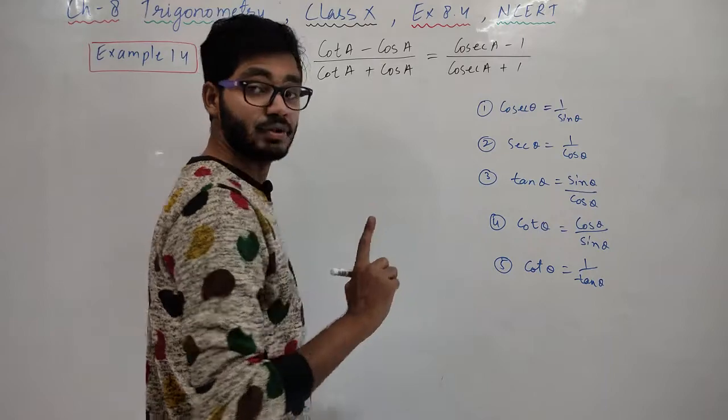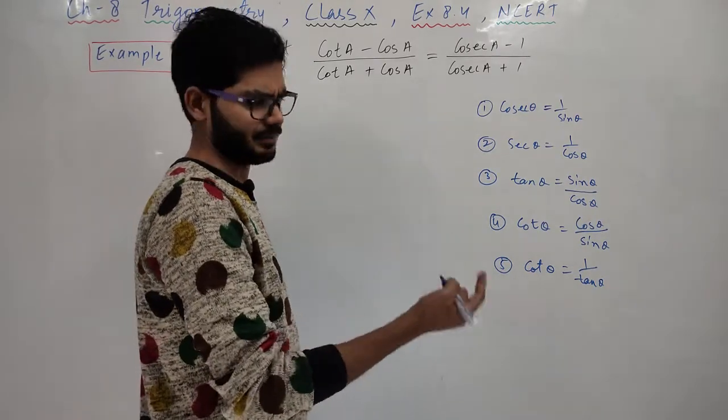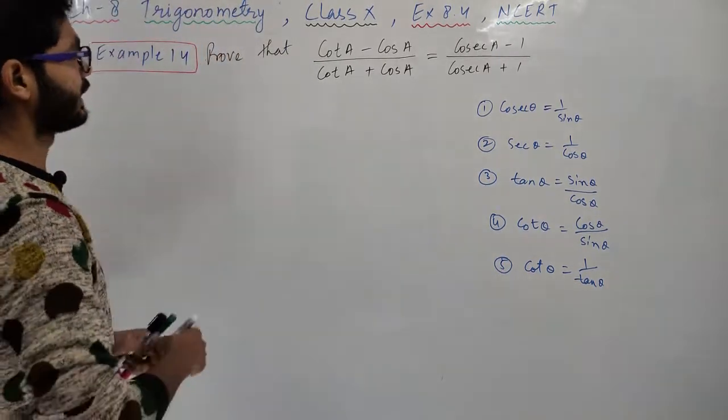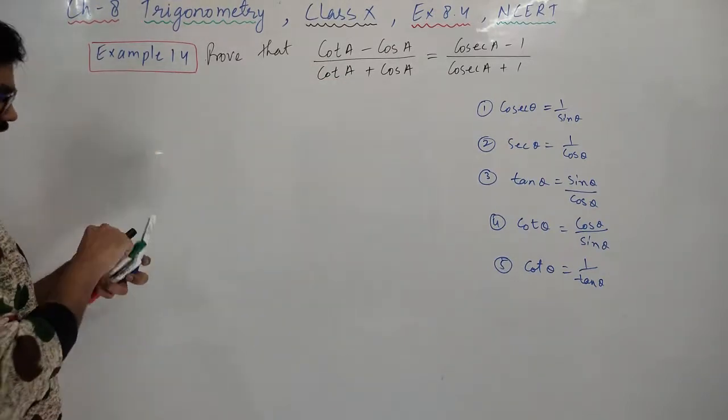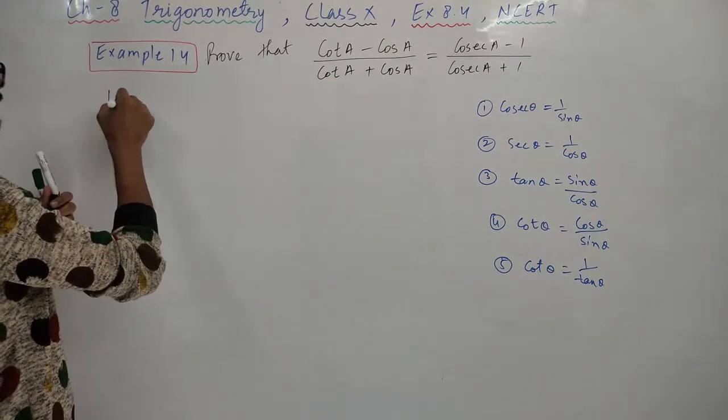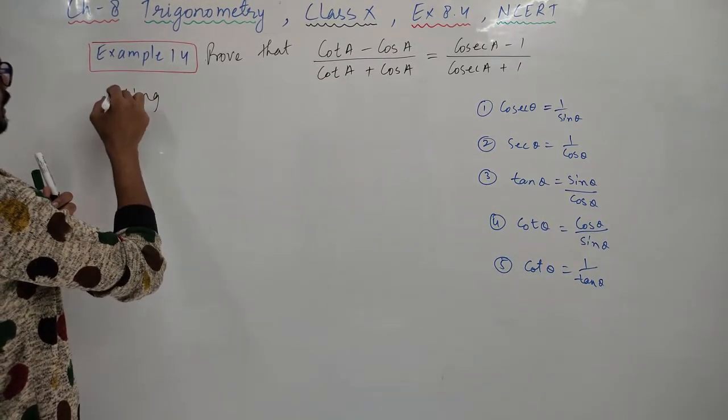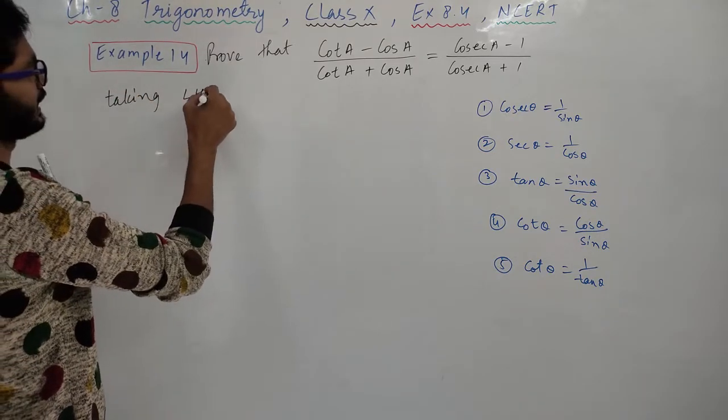You don't need this. But the three identities from the exercise, you should know those. Okay, let's go here. What am I doing? Taking left hand side.